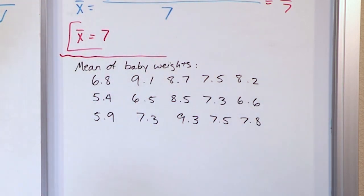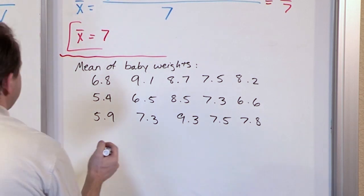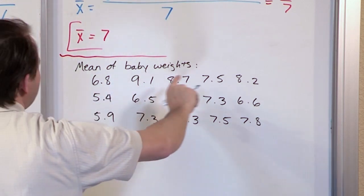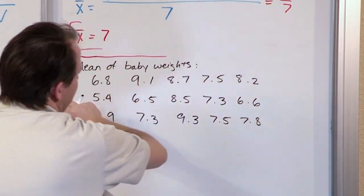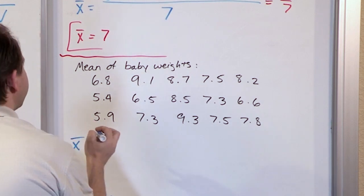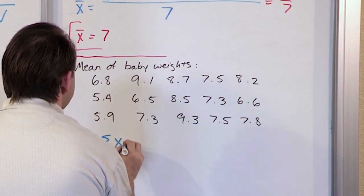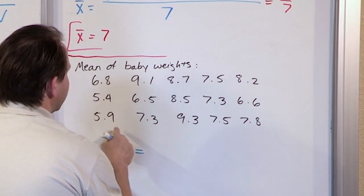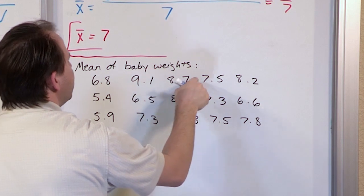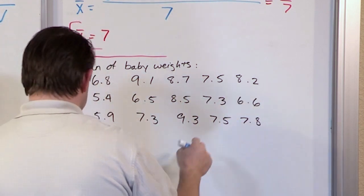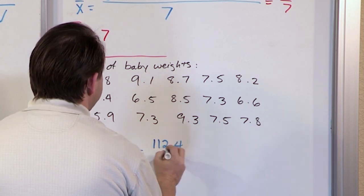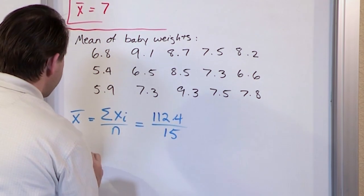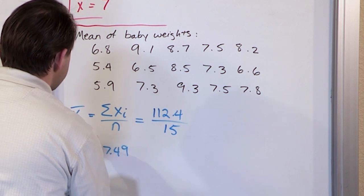You'll notice I give you a lot of values here, and that's on purpose. So we're going to have the sample mean. It would be very lengthy to write out 6.8 plus 9.1 plus 8.7 and go on and on. So we're going to use our shorthand notation: the sum of the x values over n, which is the number. If you add all these things together in a calculator, you're going to get 112.4. And you have 15 samples. So what you'll get is 7.49 — that is the sample mean.